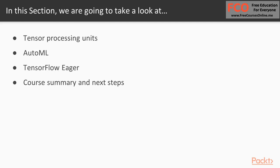Next, we'll go over the concepts behind automated machine learning, also called AutoML, which aims to automate processes like hyperparameter tuning and model selection. Then we'll work through some examples using TensorFlow Eager, which is a new imperative-style interface to TensorFlow, still in the experimental stages. It feels more like NumPy or PyTorch compared to TensorFlow, where we define our graph computation and then it all executes at once — a declarative approach. We'll wrap up the section and the course with a summary video and considerations for next steps in improving your TensorFlow understanding.